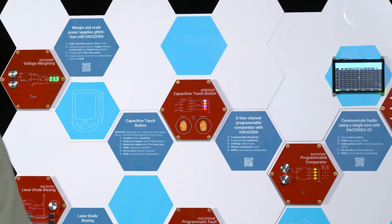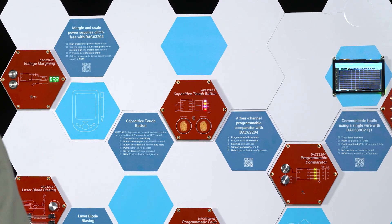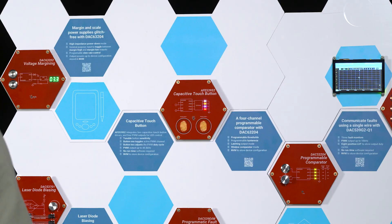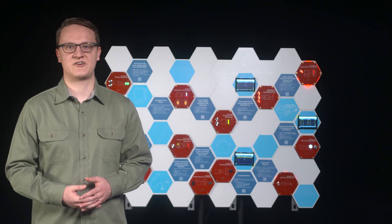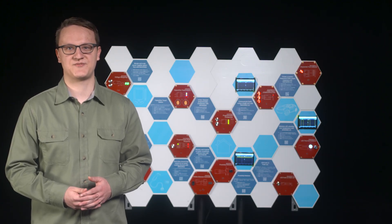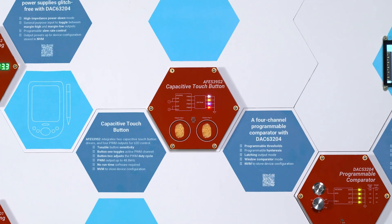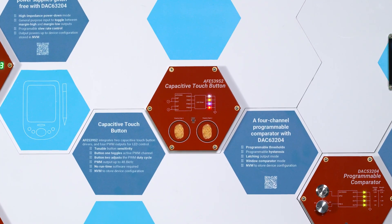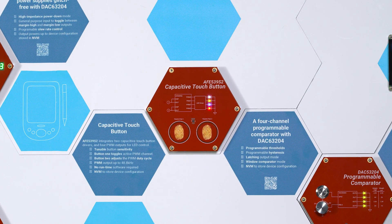The AFE 539 S2 integrates a state machine capable of detecting parasitic capacitance changes introduced by a finger touch on a conductive plate. The device differentiates between short and long touches and integrates counter and error debouncing for reliable performance. The AFE 539 S2 generates PWM patterns to control LED animations, such as brightness control or cycling between LEDs or colors.